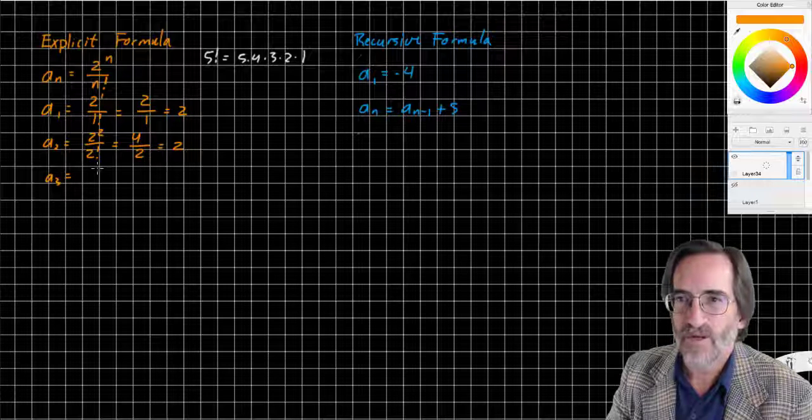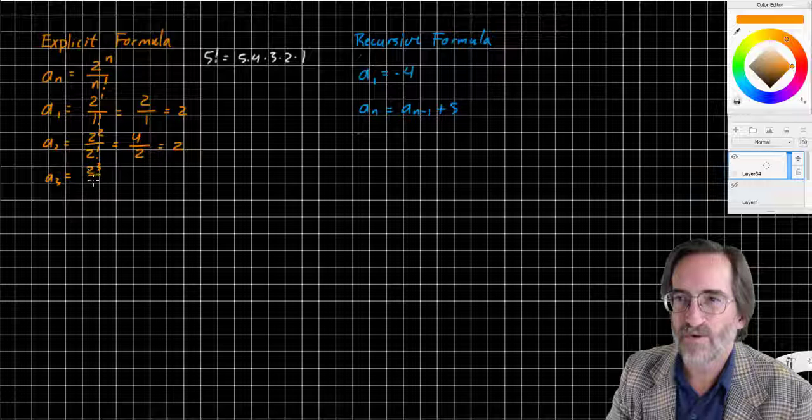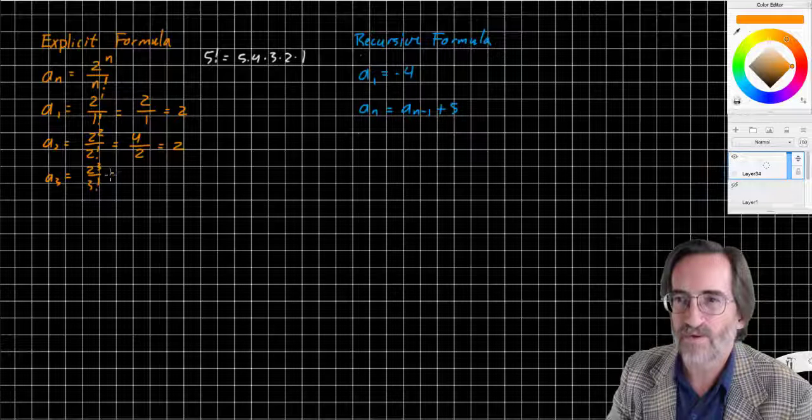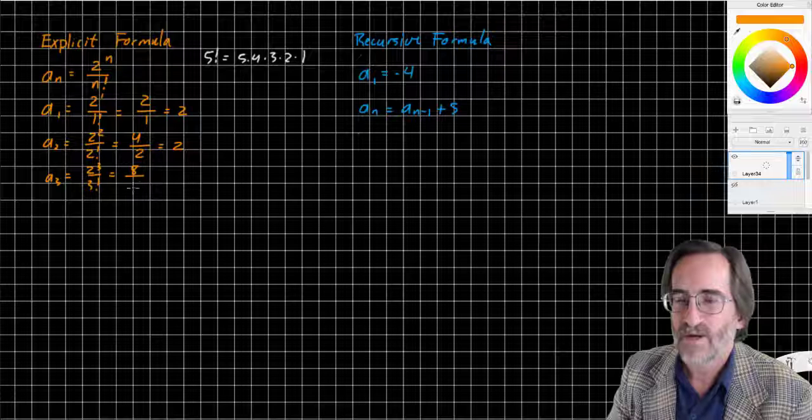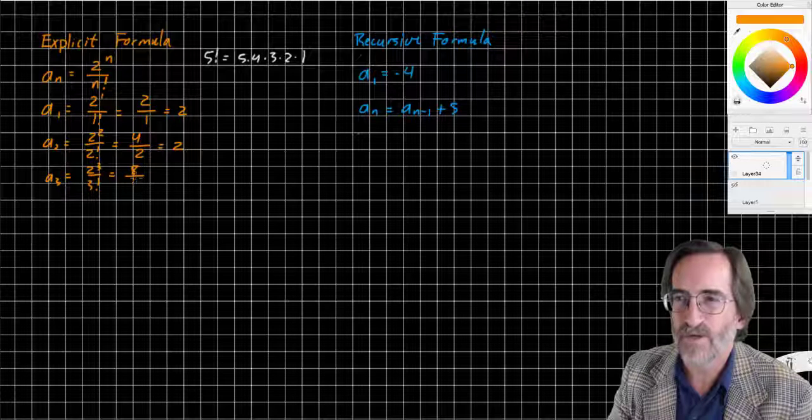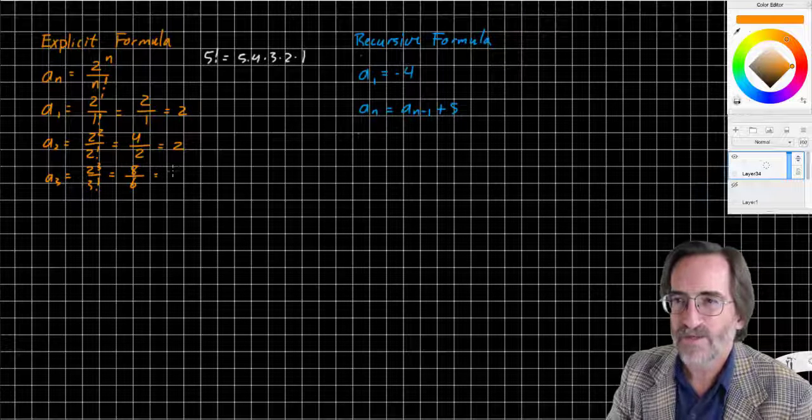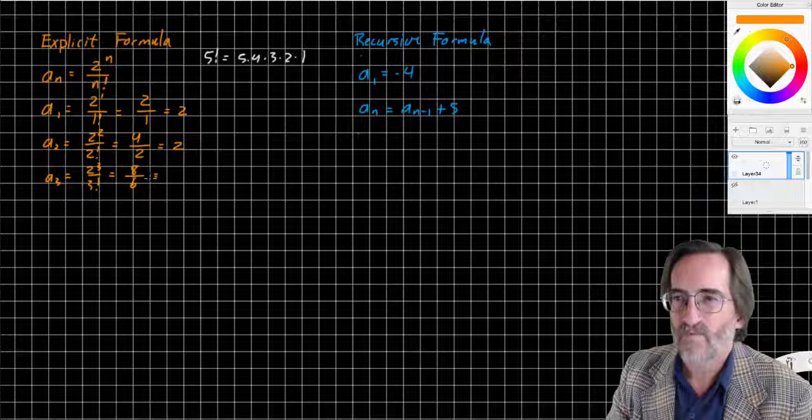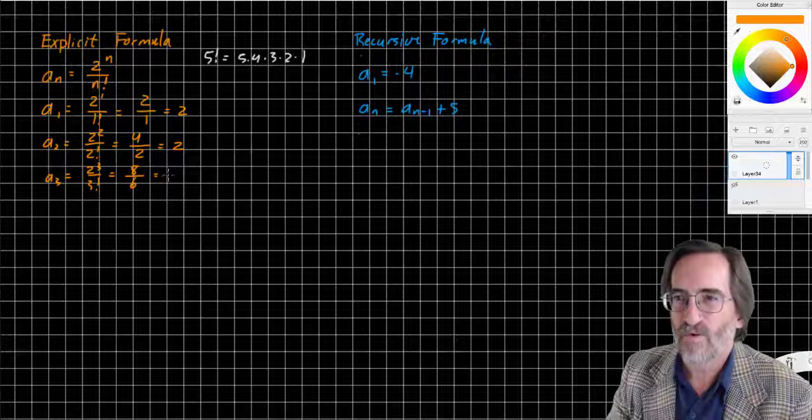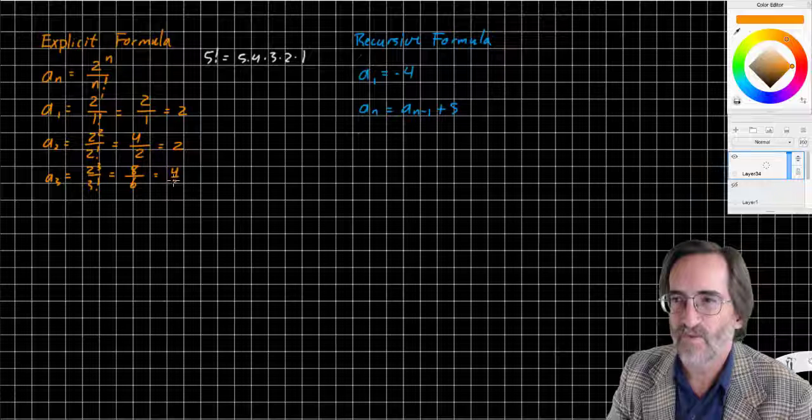A sub 3 is 2 to the 3rd over 3 factorial. 2 to the 3rd is 8. 3 factorial is 3 times 2 times 1 is 6. 8 over 6 is 4 thirds. I'm just going to leave it as 4 thirds.